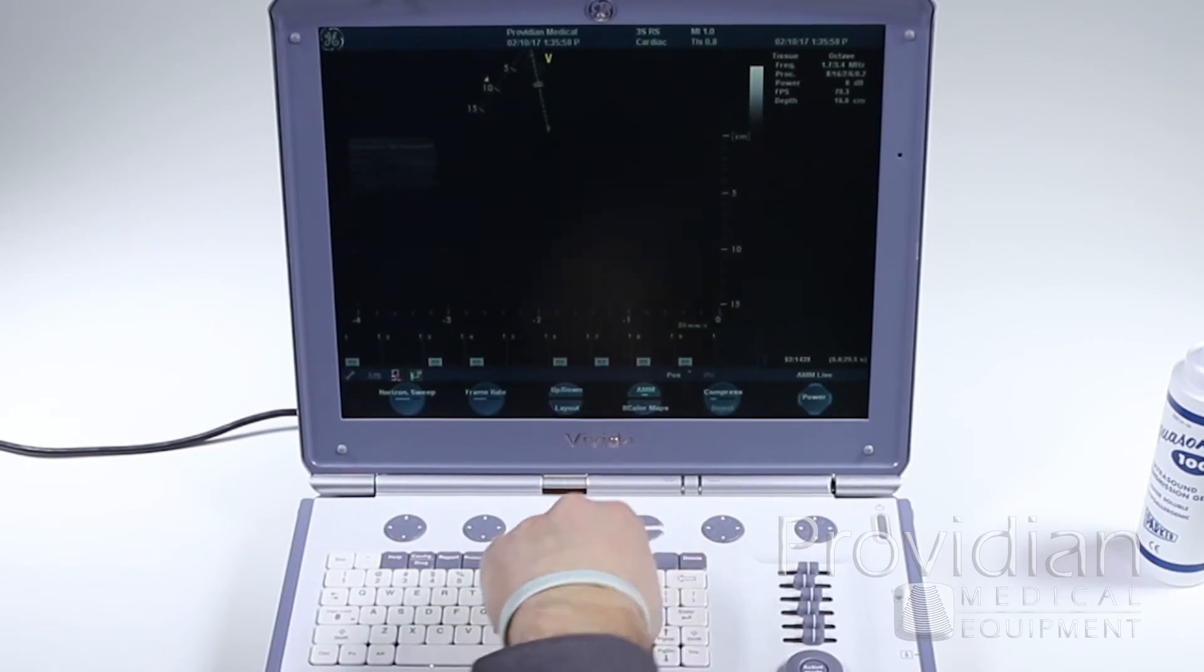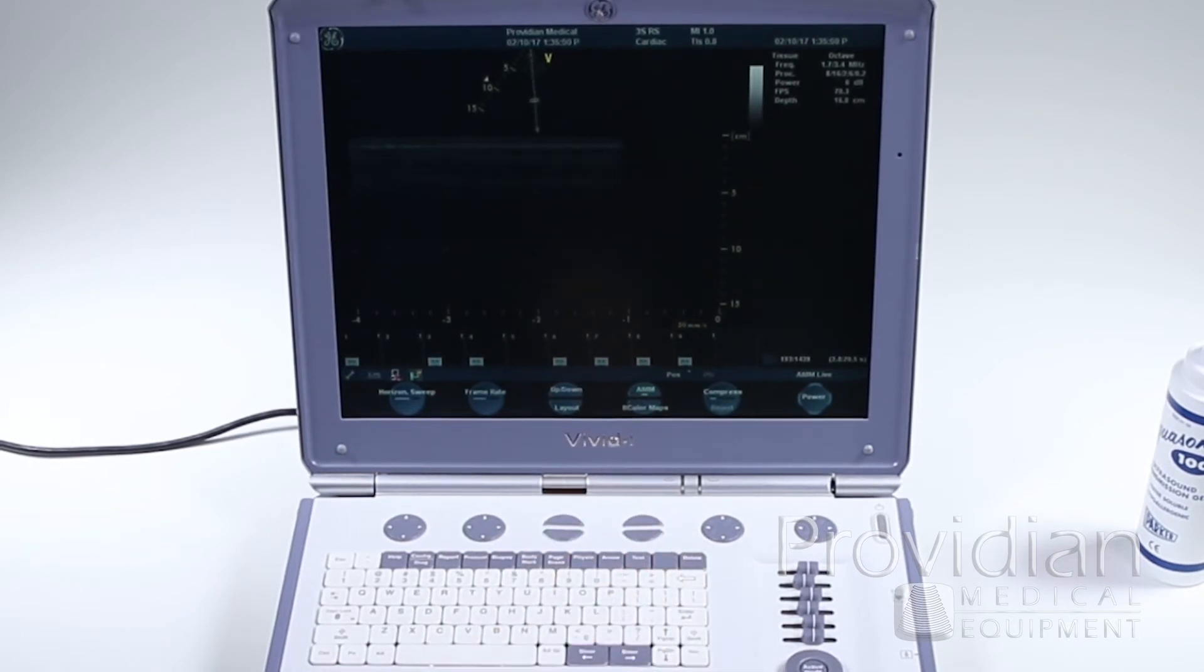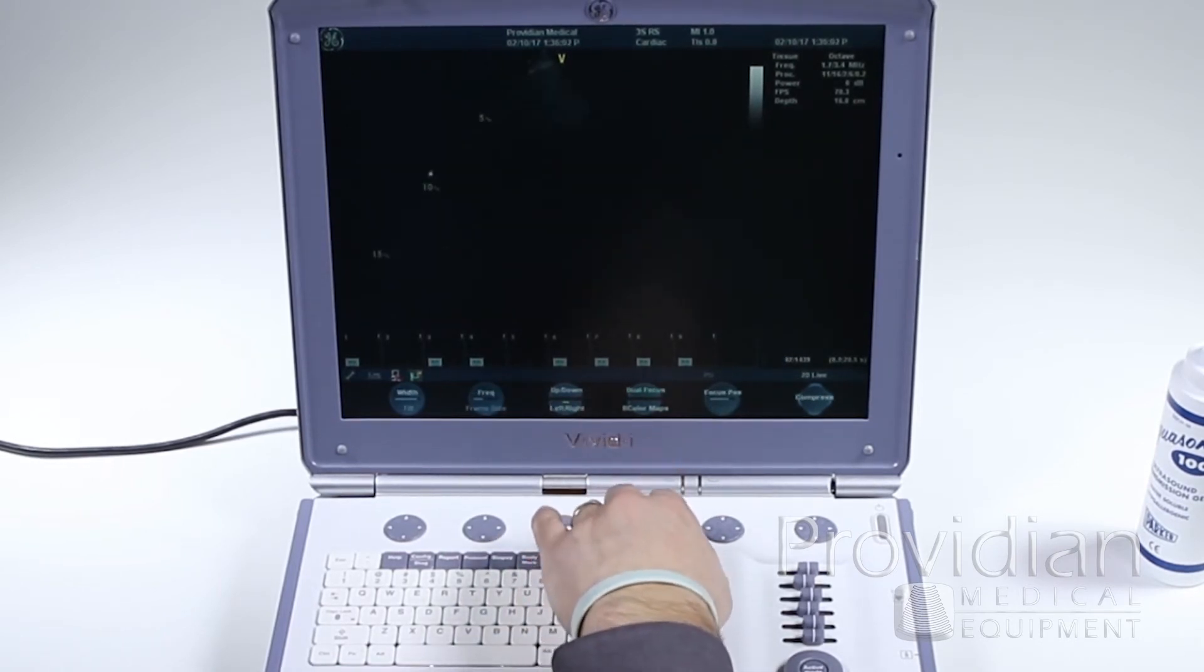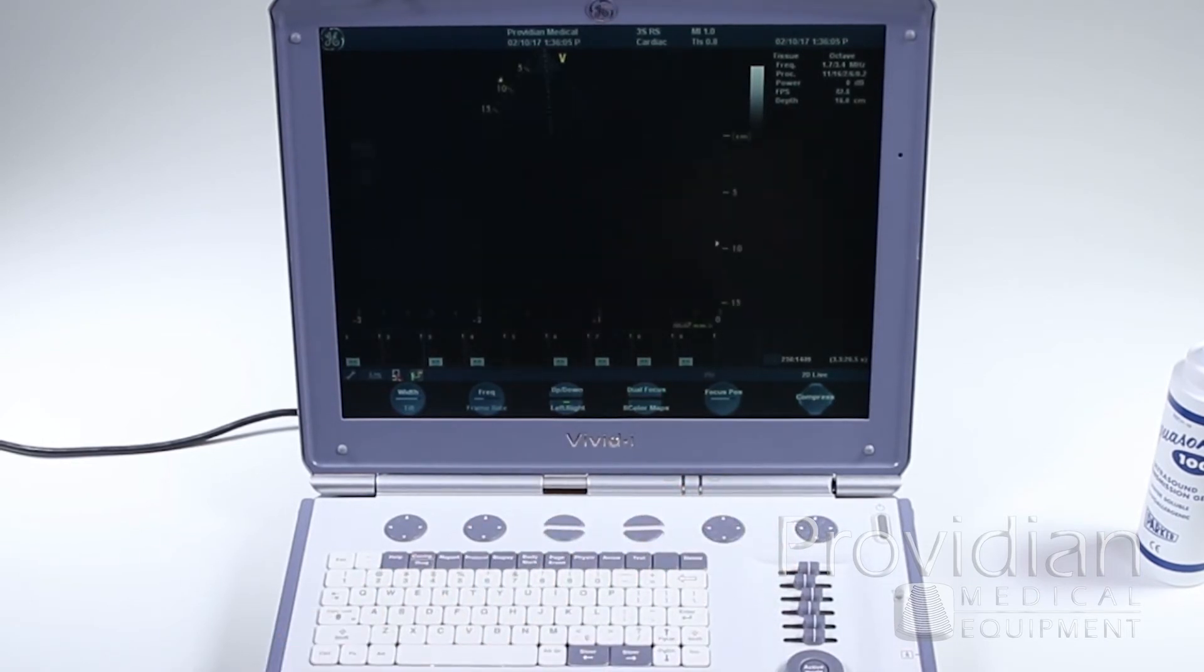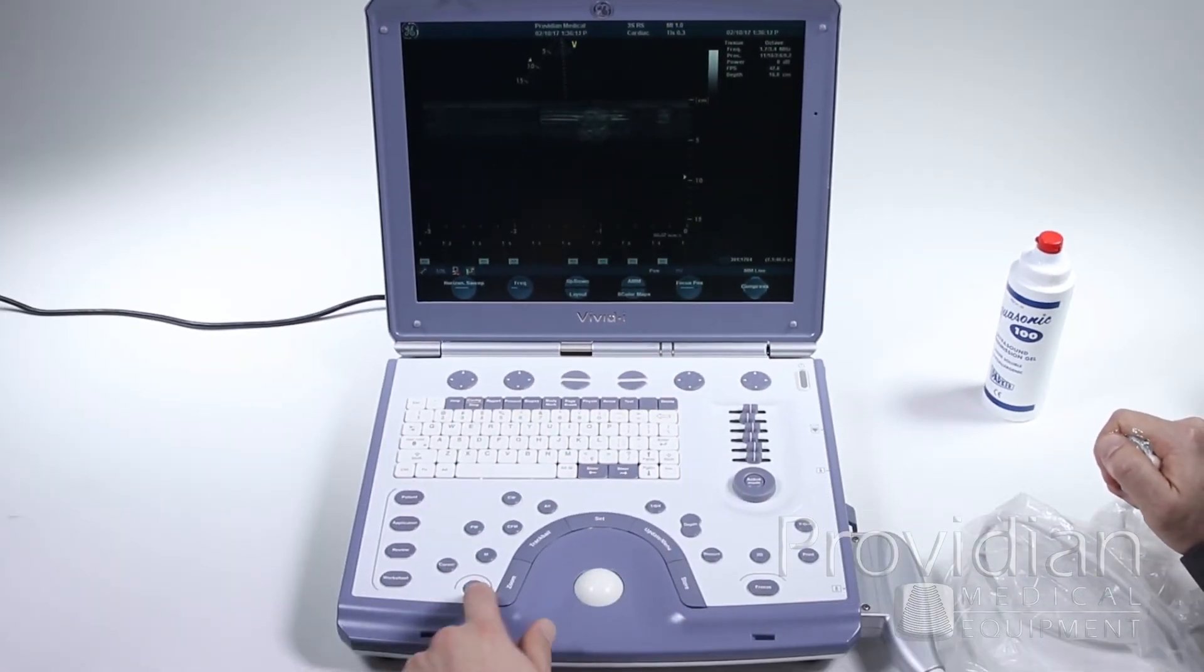Anatomical M-Mode is here. You can flip that on and get your new direction for the anatomical M-Mode. Color maps, focal position. Press 2D to go back.